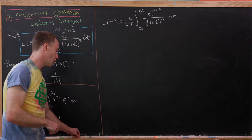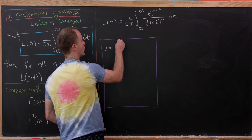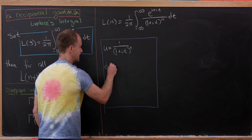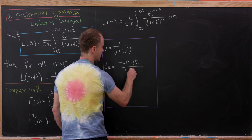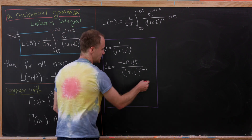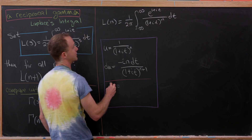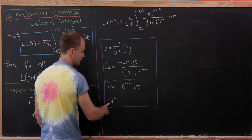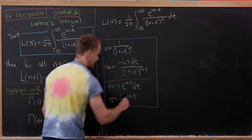We'll do one step of integration by parts on this integral. We let u equal 1 over (1 + it) to the n, so du equals minus i times n times dt over (1 + it) to the n+1. Then dv equals e to the (1 + it) dt, giving v equals 1 over i times e to the (1 + it).